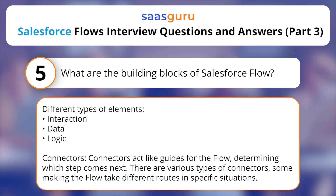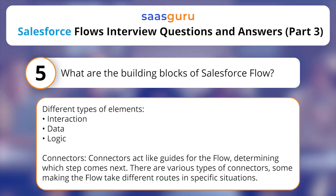Connectors act like guides for the Flow, determining which step comes next. There are various types of connectors, some making the Flow take different routes in specific situations.